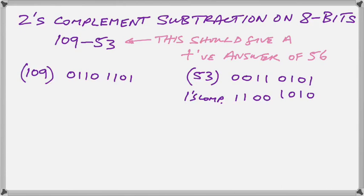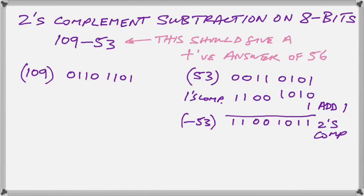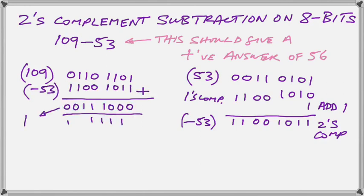Next, we find the 1's complement by swapping the bits. Then we add 1 to get the 2's complement. Then we take the 2's complement and we put it under the number that we are trying to subtract it from. And we add.